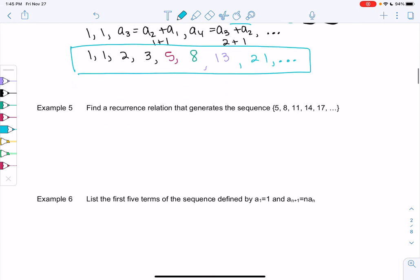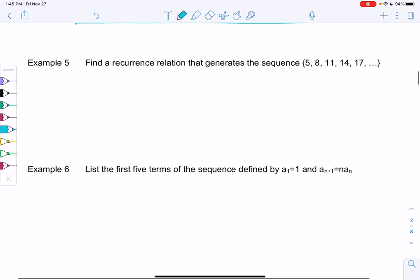Let's try some more. Let's find a recurrence relation that generates 5, 8, 11, 14, 17. We're going to start with a_1 is 5, and then a_2 is 8. So how can I write 8 in terms of 5? It looks like it would be 5 plus 3. So that would be a_1 plus 3.